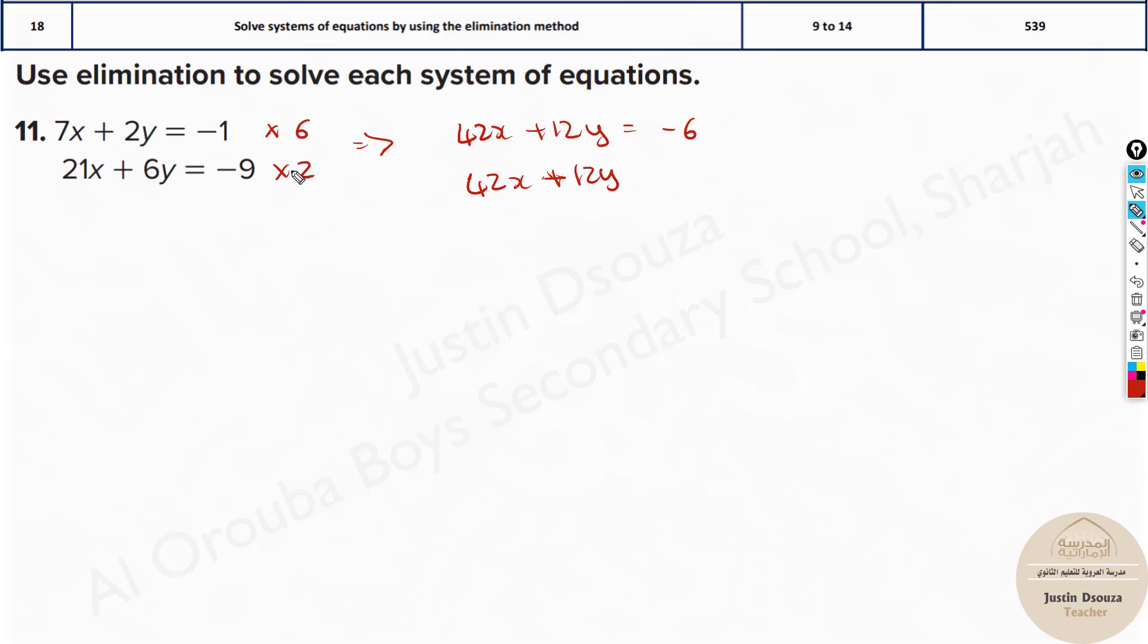Or you can write positive both sides and then you should change the signs for all and subtract it. So it's easier if you do minus. So what I'll do is I'll just multiply the below term by negative 2. So it'll be minus 42x minus 12y equals positive 18. And now look here, when you add them up, this cancels, this cancels, 0 equals over here 12. Is this correct?